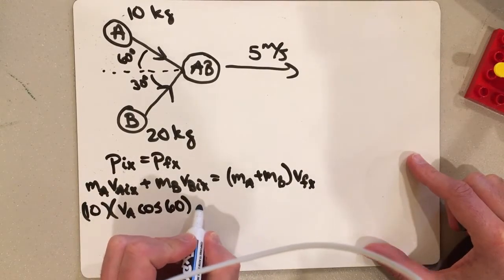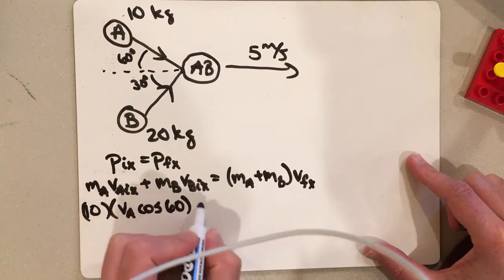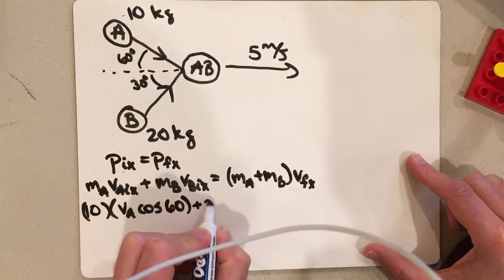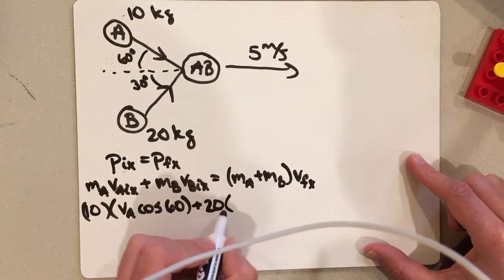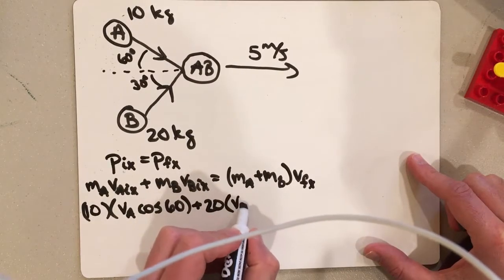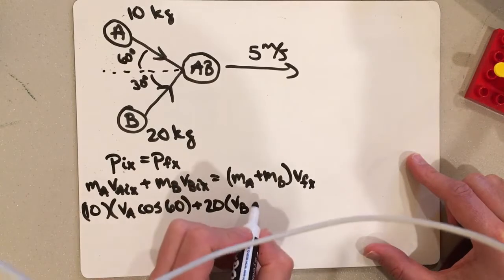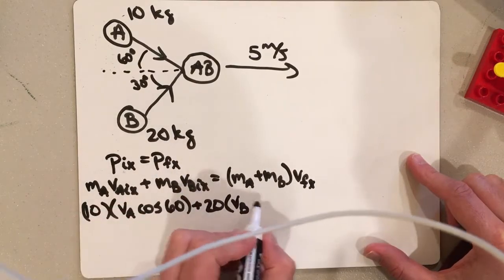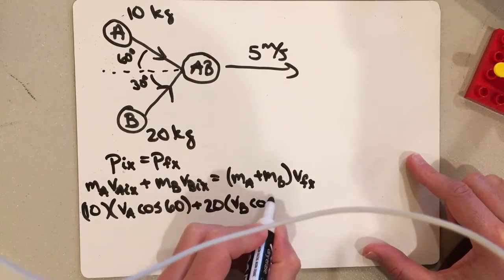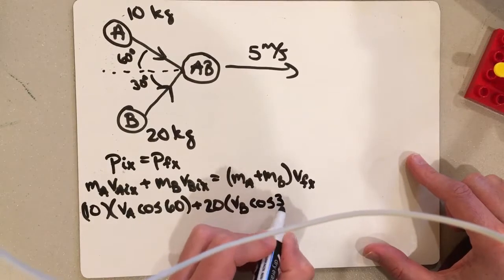Now then I'm going to go through and do B. Same idea. B, though, has a mass of 20 kilograms. And I'm going to take its velocity VB. And again, it's going to be a cosine function to get the X component. This time it's going to be cosine of 30.